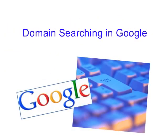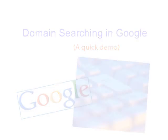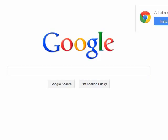Domain Searching in Google — a quick demo brought to you by the Los Rios College Libraries. So your instructor said you should only use a specific type of websites like .edu or .org websites for your research paper. Here's a quick demonstration of how to narrow your Google search to look for websites published by a specific domain.